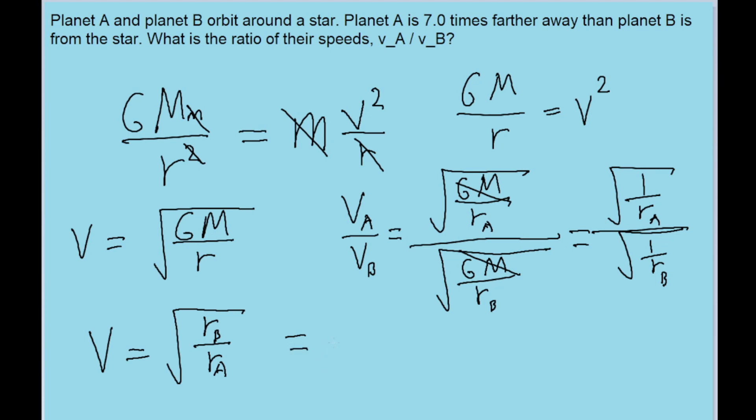since it says planet A is 7 times farther away than planet B, we don't actually need to know what the actual distances are, but since this formula is set up as a ratio,